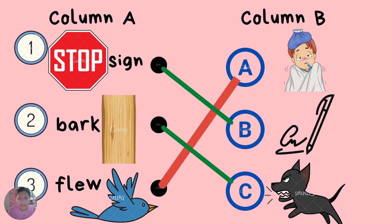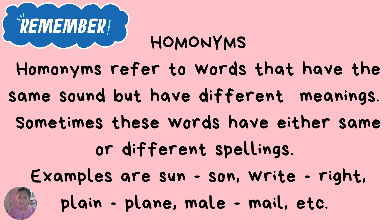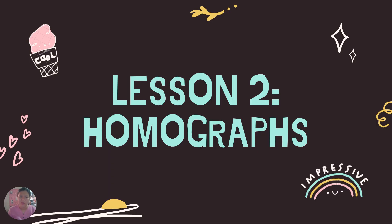Again, children: what are homonyms? Homonyms refer to words that have the same sound but have different meanings. Sometimes these words have either the same or different spellings. Examples are: son and son, rag and rag, plain and plain, male and male, and others. Now, let us proceed with Lesson 2.